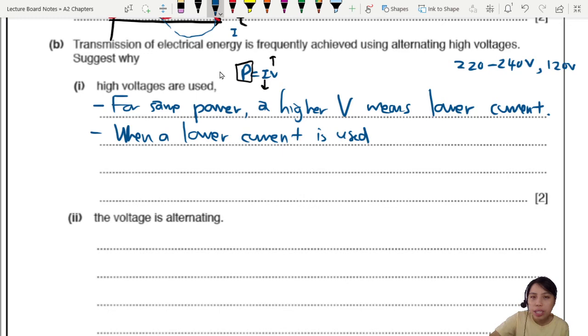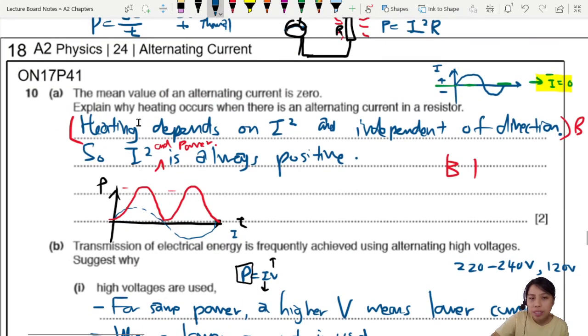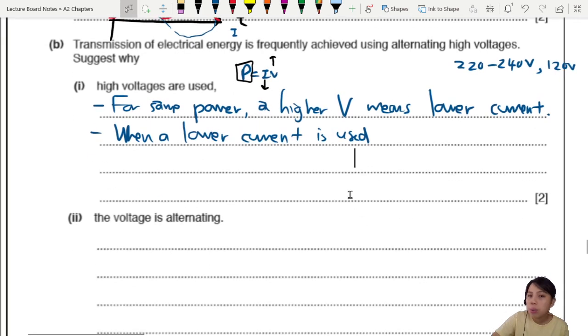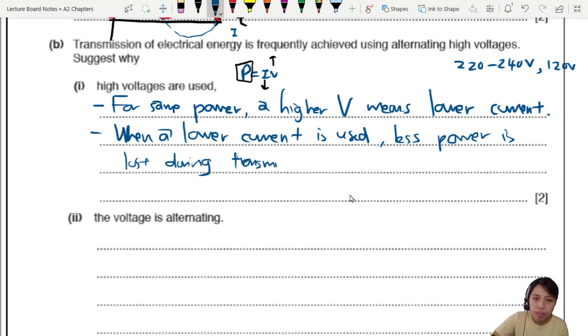Well, we can say the next point. When a lower current is used, what happened to energy losses? So now we talk about current, right? Heating depends on I squared. When a lower current is used, less power or less energy is lost, less power is lost during transmission. This is the reason why we use high voltage, so that for the same amount of power, current is not as big. Current is going to cause heating, melt the wire. No, no, no, we don't want all those stuff. So the first mark comes from you, how to think of your PIV. Higher V means lower current. And what does that mean? Less power lost during transmission. For lower current, less power is lost.